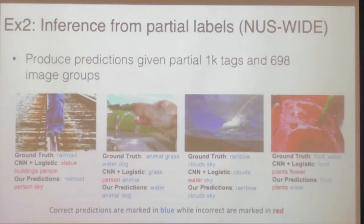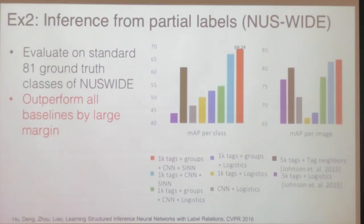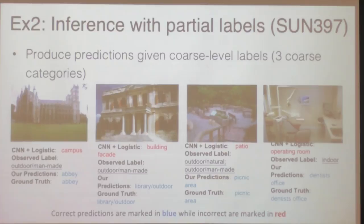We've also compared to other state-of-the-art methods. Results on NUS-WIDE show that with our method — using group memberships from Flickr users as side information — we get MAP results that are quite good. Similarly on SUN 397, assuming someone gives the top-level category label such as outdoor man-made, outdoor natural, or indoor, we can infer the rest of the tags that should go on the image.